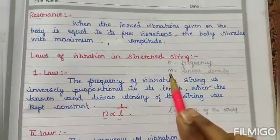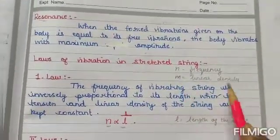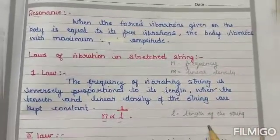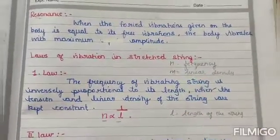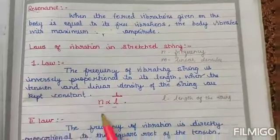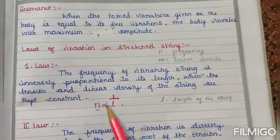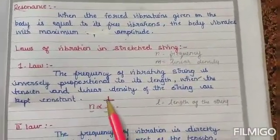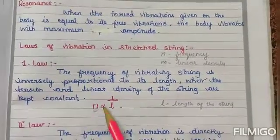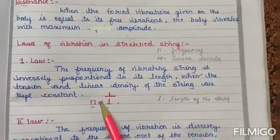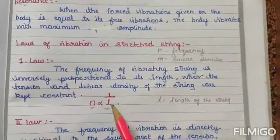M is linear density, L is length of the string. Among the three quantities, we take the first one: frequency is inversely proportional — there is a division sign — so frequency is inversely proportional to L, the length of the string.